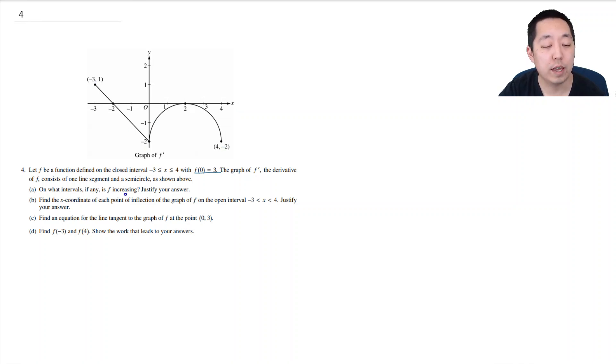On what intervals, if any, is f increasing? f increases when f prime is greater than 0. That's just a general fact. If the slopes are positive it's increasing. f prime is greater than 0 when it's above the x-axis here, so that is on negative 3 to 2.